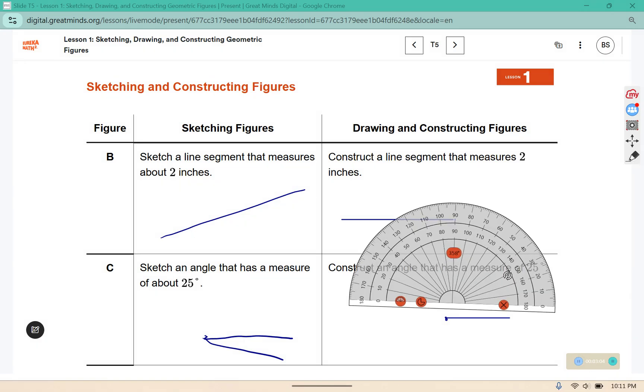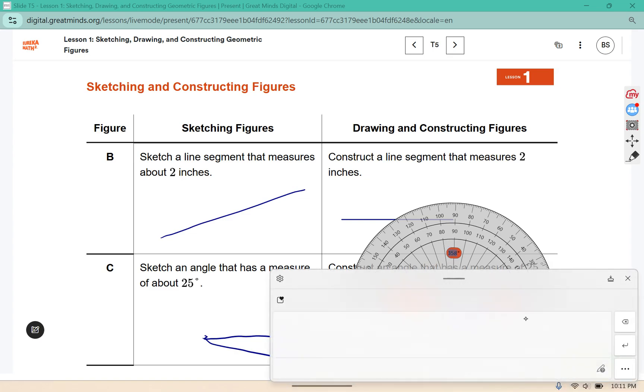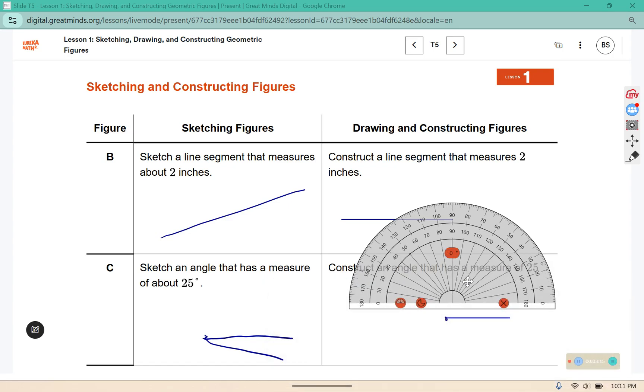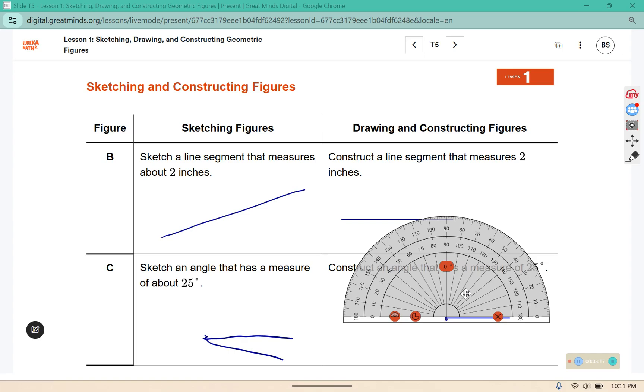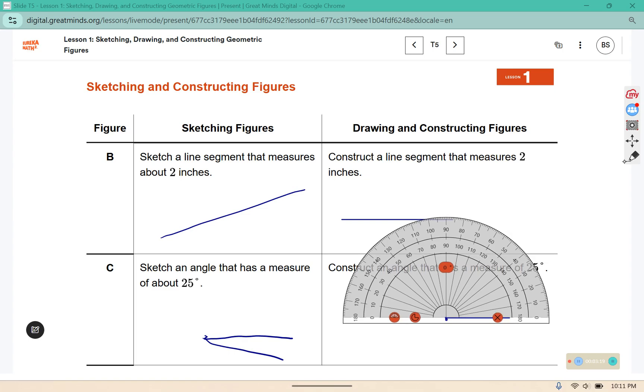You will place the center of your protractor on the dot, and then we'll create a mark at 25 degrees.